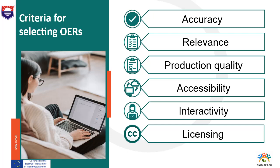Criteria for selecting OERs: Accuracy — the resource presents accurate information with no major errors, omissions, spelling mistakes or typos. Relevance — information addresses one or more learning objectives. Production quality — information is clear, understandable, easy to navigate and of high quality for video and audio resources. Accessibility — the resource is available in alternative formats and for audio and video there is a transcript or subtitles. Interactivity — the resource encourages active learning and class participation and provides opportunities for students to test their understanding of the material, such as a video with embedded questions. Licensing — reusing, modification or adoption of the material is allowed by the license.